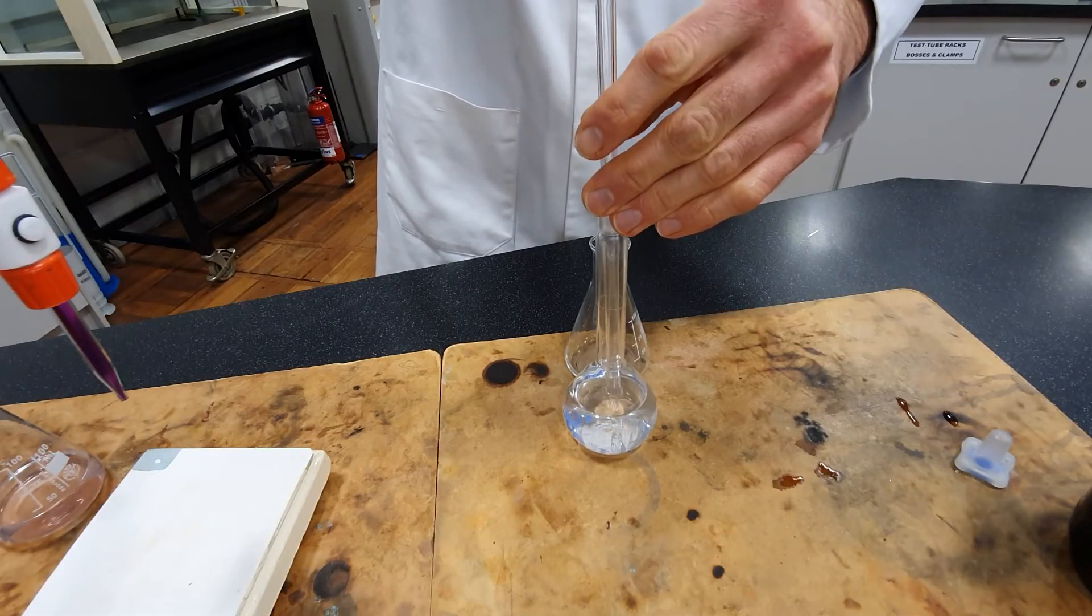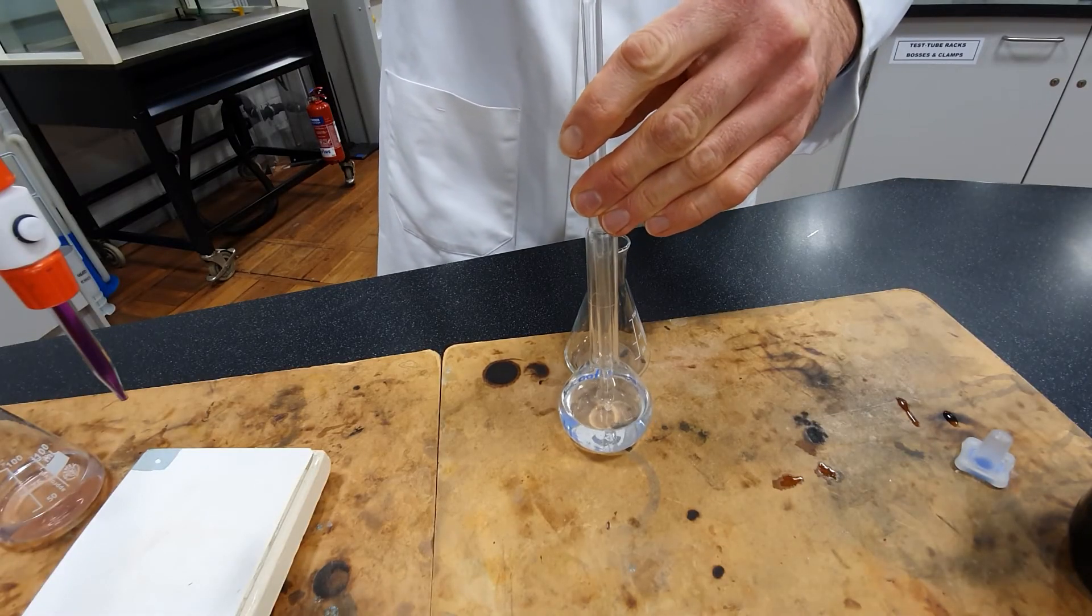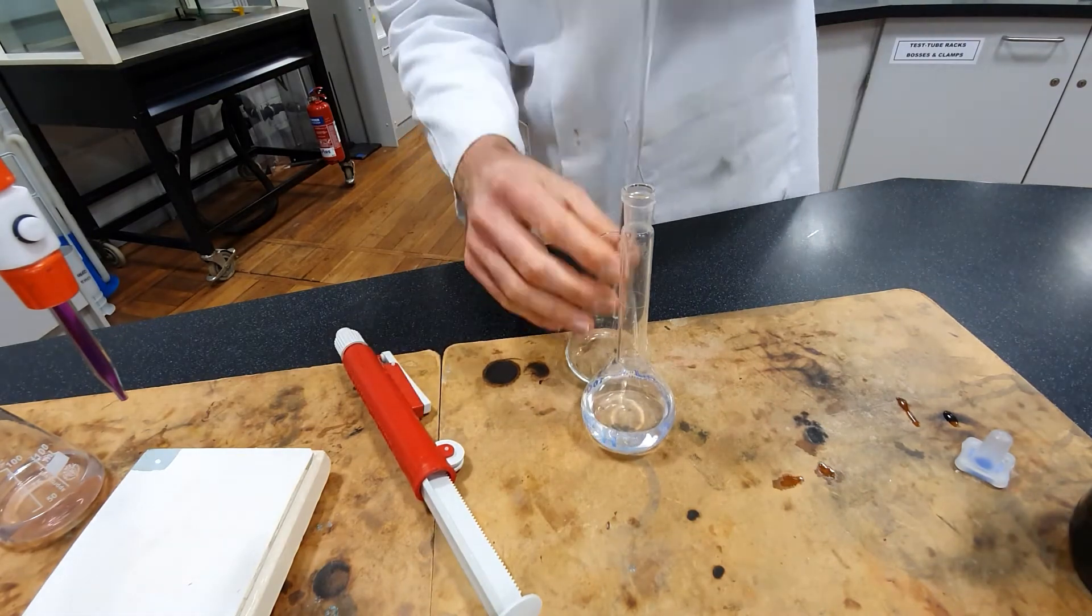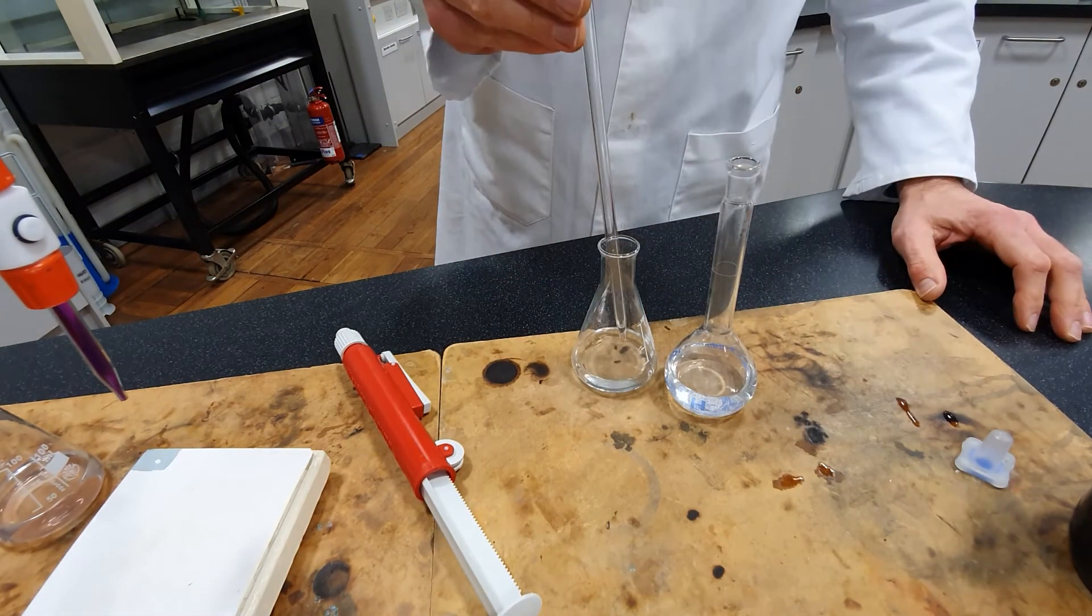Let's have a go at a second run. Hopefully this one will be a little more accurate than the first. 25 cm³ of the iron solution. Record the volume of the manganate solution at the beginning of the second run.